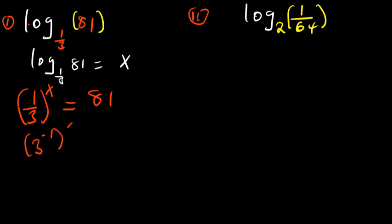Outside there is x, which is equal to 81. x can come inside with negative 1, and that becomes 3 raised to the power negative x is equal to 81. Now, at this point, I can make the base to be the same. 81, for it to have the same base as 3, can be written as 3 raised to the power 4.